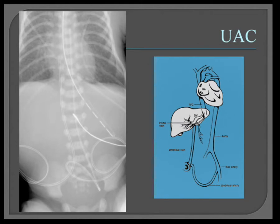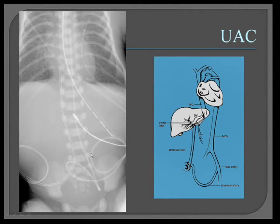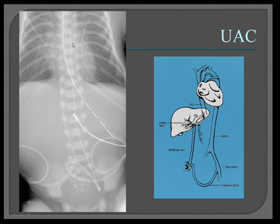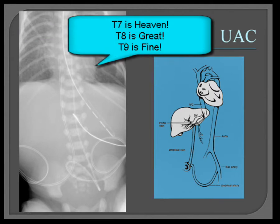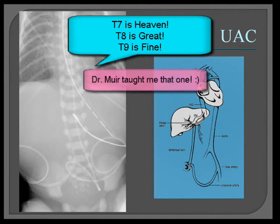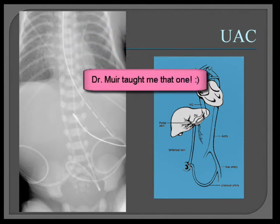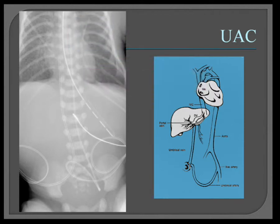Since lines can cause thrombosis, the end position is where you don't want to compromise aortic branches. There are two types of arterial lines: a low line that ends at L3 or L4, or a high line which ends from T7 to T12. One way to remember that is T7 is heaven, T8 is great, and T9 is fine. It's kind of cheesy, but maybe it'll help you remember where the UAC should be.